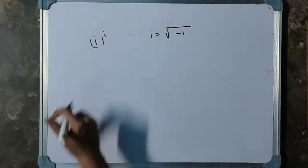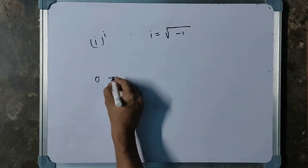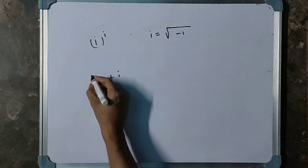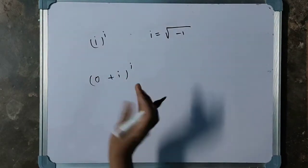Now, i can be written as 0 plus i inside the bracket, raised to the power i.